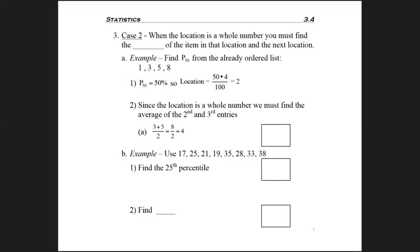Now we're interested in the second case. This is when the location formula gives us a whole number location. Then we must find the average of the item in that location and the next location.